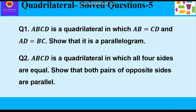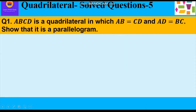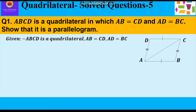Now let's start with the first question. ABCD is a quadrilateral in which AB is equal to CD and AD is equal to BC. Show that it's a parallelogram. Given: ABCD is a quadrilateral in which the pair of opposite sides are equal, that is AB equals CD and AD equals BC. To prove: ABCD is a parallelogram.